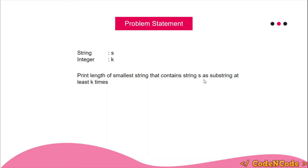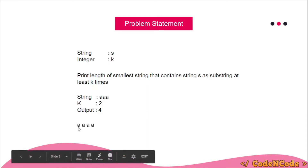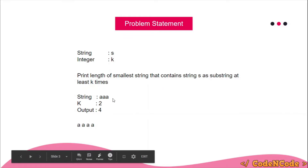For example, if the string was 'aaa' (triple a) and K was 2, the output would be 4. A string of length 4 — 'aaaa' — contains 'aaa' two times as a substring: from characters 1 to 3, and from characters 2 to 4. You can't have length less than 4 and still have the string appear as a substring twice, so the minimum length is 4.